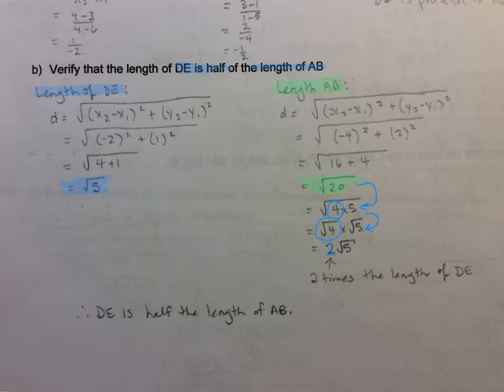So since we have 2 times the length of DE, since DE is root 5, we know that AB is twice as long as side DE, which then implies that DE is half the length of AB.